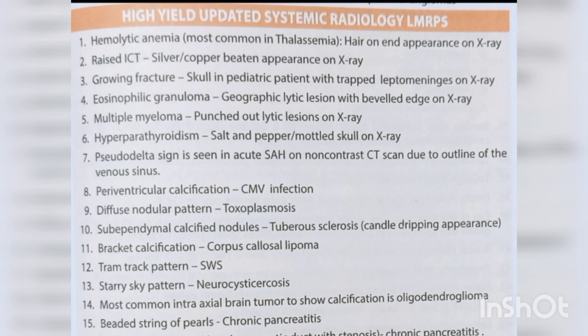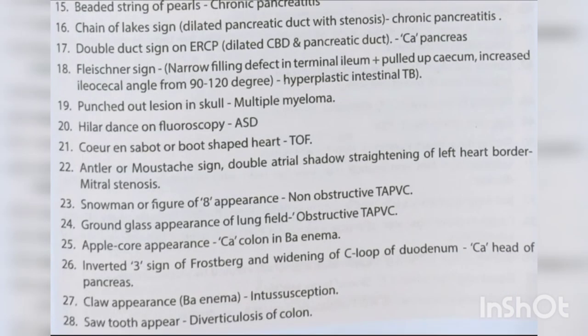Beaded string of pearls — chronic pancreatitis. Chain of lakes sign — dilated pancreatic duct with stenosis, chronic pancreatitis. Double duct sign on ERCP — dilated CBD and pancreatic duct — carcinoma pancreas.